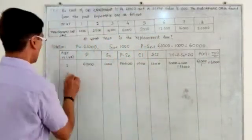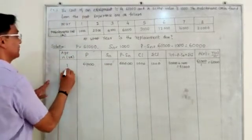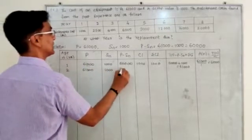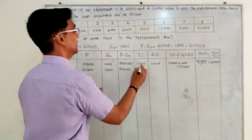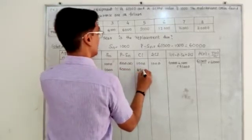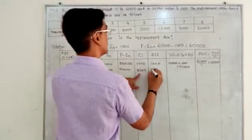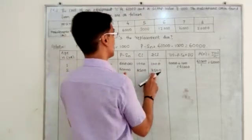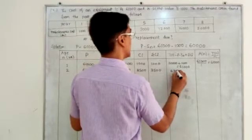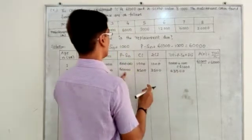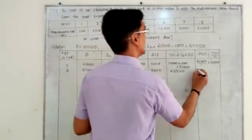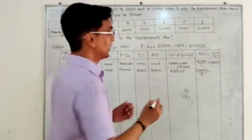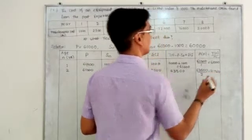Now from the next year I will write down and show here also. For the second year: P minus S_N is 61,000, and C_I is 2,500, so cumulative C_I is 1,000 plus 2,500 equals 3,500. Now 60,000 plus 3,500 is 63,500, and 63,500 divided by 2 equals 31,750.